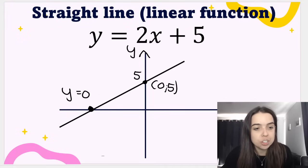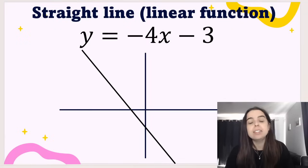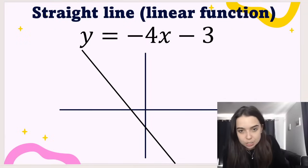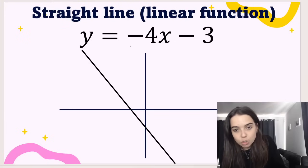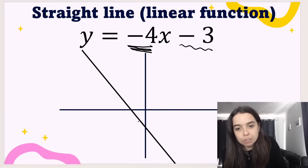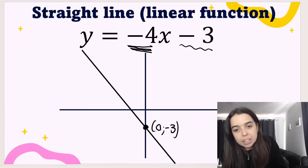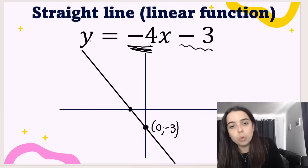If we look at this function or this graph over here, we can see that it has a decreasing slope, which makes sense because the gradient is negative. Negative gradient, decreasing graph. We can see here that the y-intercept is negative 3, which means that coordinate is (0, -3). Again, to find the x-intercept, we make y equal to 0 and solve.